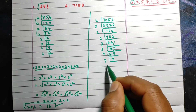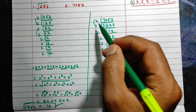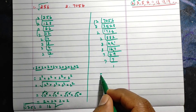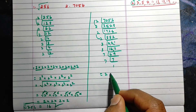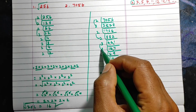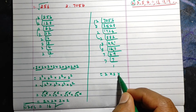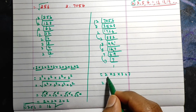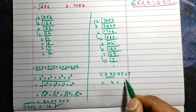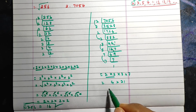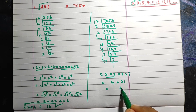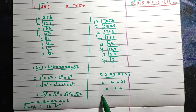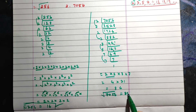So 49 ÷ 7 = 7, and 7 ÷ 7 = 1. Now we make pairs: from the pair of 2s take one 2, another pair of 2s take one more 2, from the pair of 3s take one 3, and from the pair of 7s take one 7. Multiply: 2 × 2 = 4, and 3 × 7 = 21, then 4 × 21 = 84. So the square root of 7056 is 84.